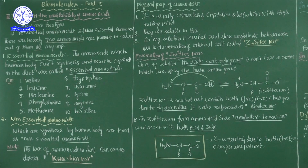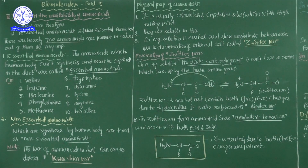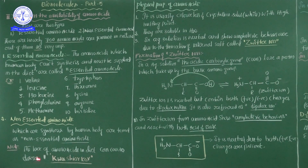The second type is non-essential amino acids. Amino acids which are synthesized by the human body are termed as non-essential amino acids. The human body can easily synthesize some kinds of amino acids, which are commonly known as non-essential amino acids. Important note: a lack of amino acids in the diet can cause diseases.